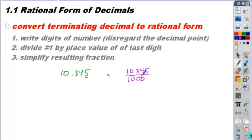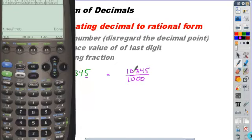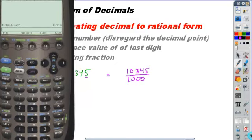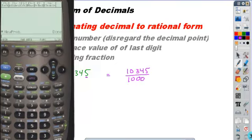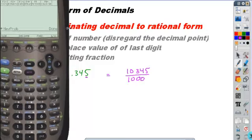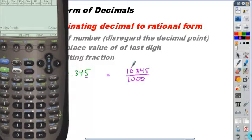Now using your calculators, I want you to go ahead and do this calculation. If you take this and you just enter what you have. We take 1, 0, 3, 4, 5, divide by 1,000. Your calculator should automatically simplify it for you. And you get your rational form of 2069 over 200.